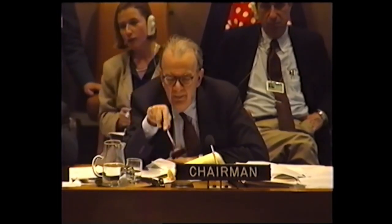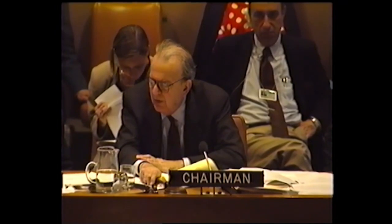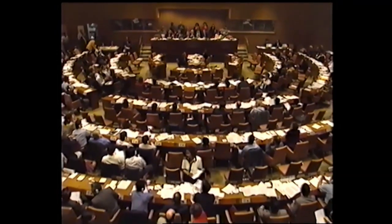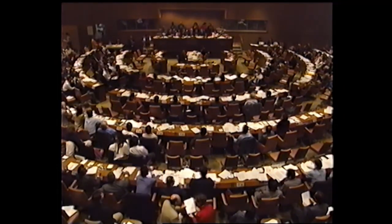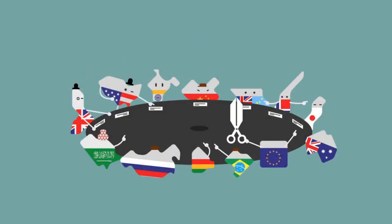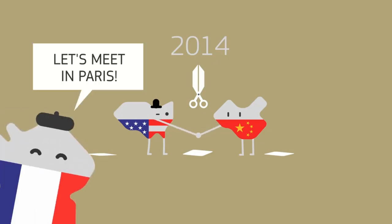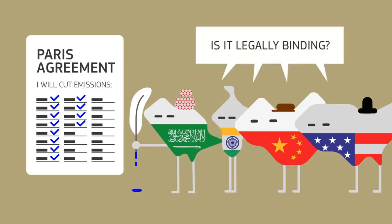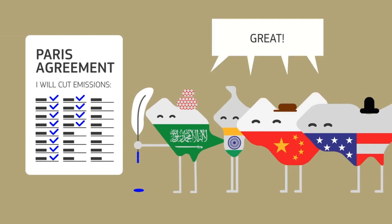In recent years, there has been growing recognition of the importance of environmental protection under international law. The United Nations Framework Convention on Climate Change (UNFCCC), which was adopted in 1992, marked a significant milestone in this regard. The UNFCCC established the framework for international cooperation to address climate change, and has since been supplemented by a number of other legal instruments, including the Paris Agreement of 2015.